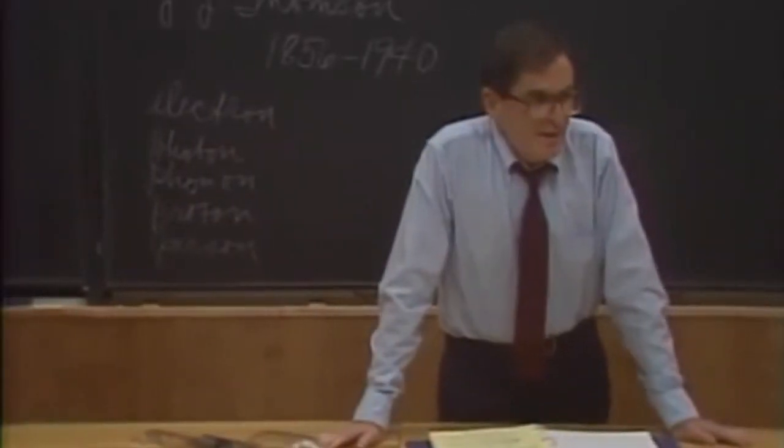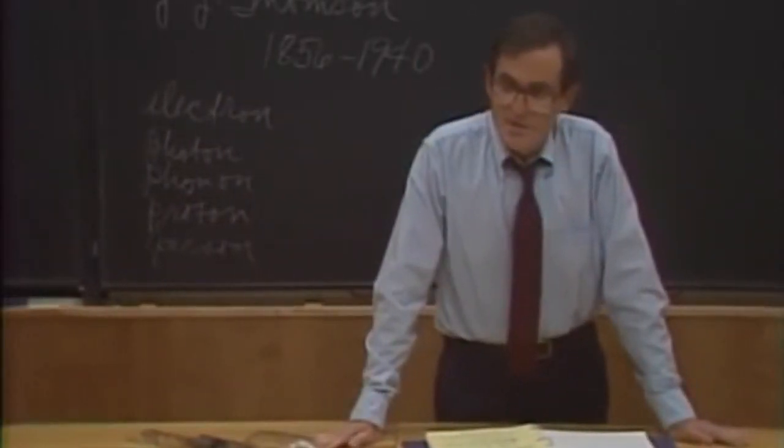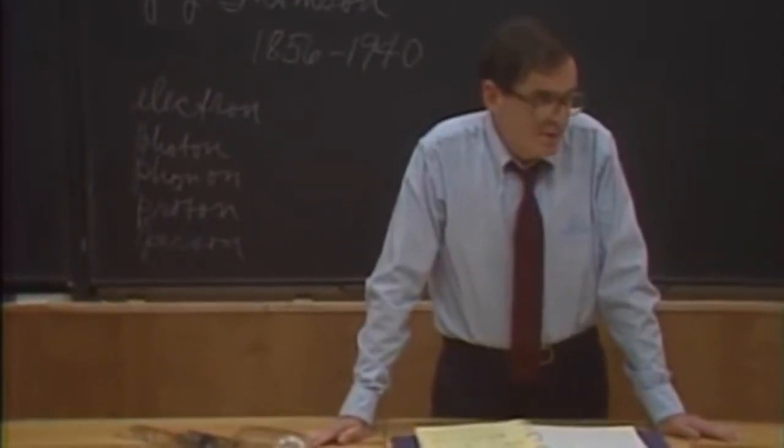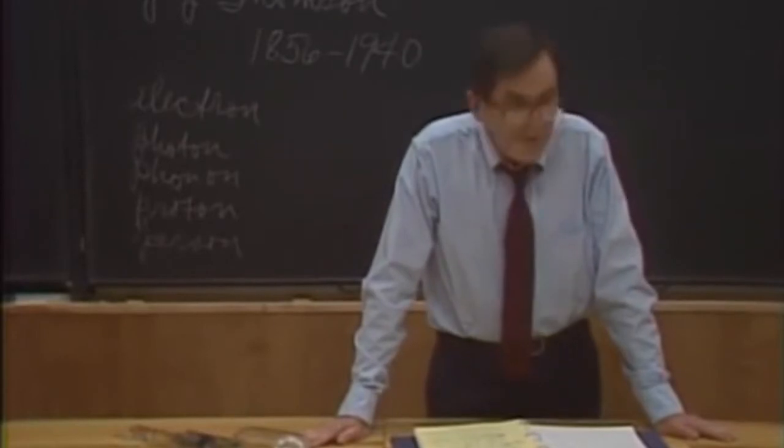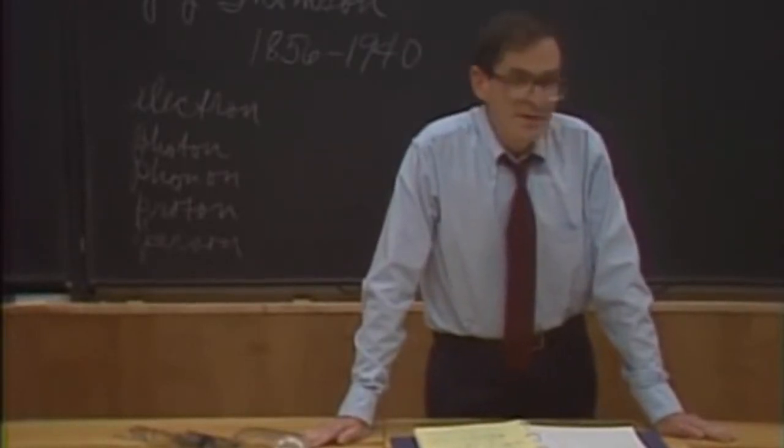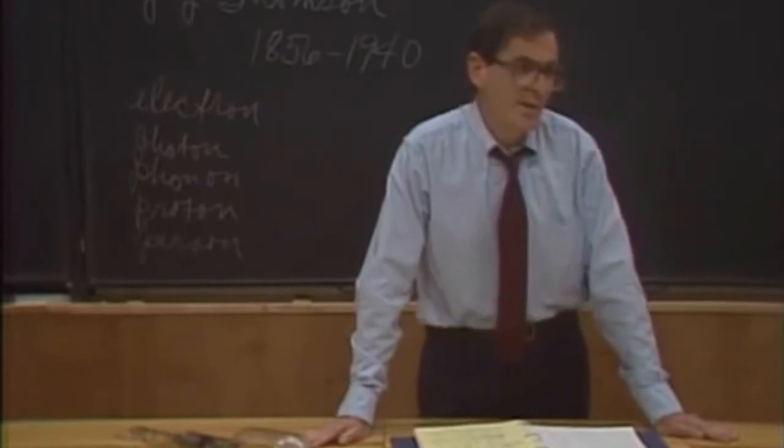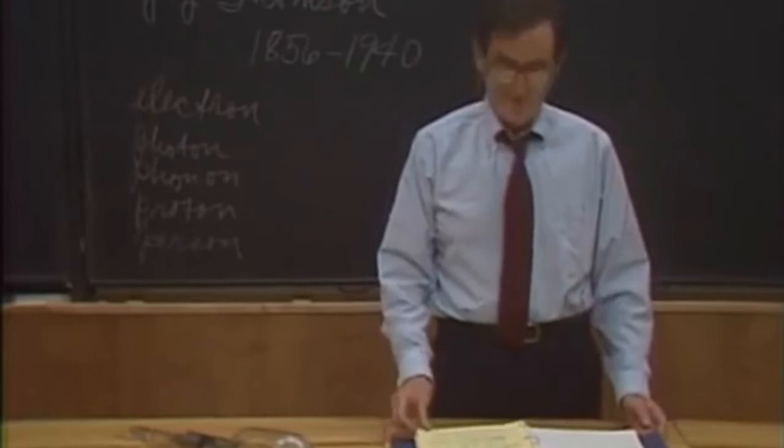Once the atom had been split and the electron had been discovered, the crucial job that remained was to measure the electric charge of the electron. And that job was done in one of the classic experiments in all of physics by the great American experimentalist Robert Andrews Milliken.